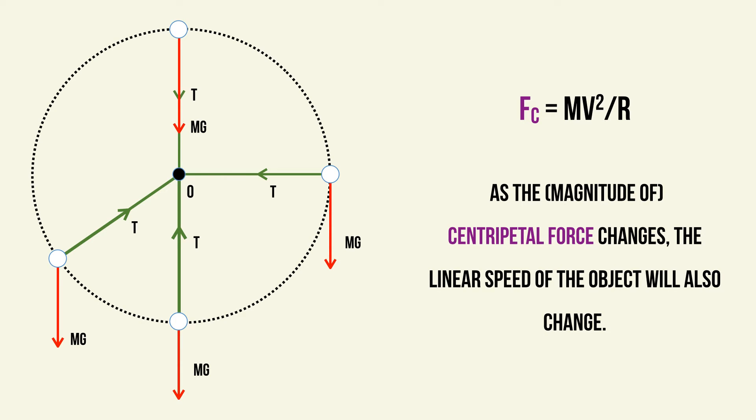The centripetal force is equal to mv²/r, where v is the tangential velocity at any position. Since the centripetal force changes, the linear speed will also have to change. As discussed in the previous video, at the bottom the centripetal force and linear speed will be the greatest, and at the top they will be the lowest.